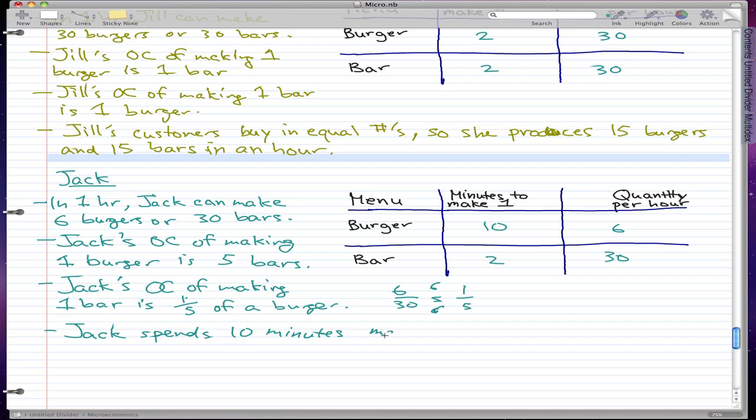So Jack spends 10 minutes making bars and 50 minutes making burgers, and he produces 5 burgers and 5 bars.